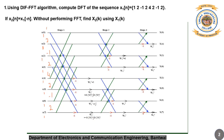Now let us trace this butterfly diagram in Stage 1. x1(0) is 1 and x1(4) is 4, so we get 5. Next, x1(1) is 2 and x1(5) is 2, so 2 plus 2 gives 4. Next, x1(2) is minus 1 and x1(6) is minus 1, so we get minus 2. Next, x1(3) is 2 and x1(7) is 2, so we get 4.